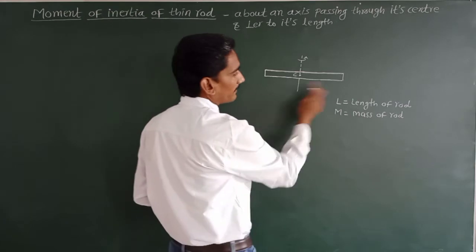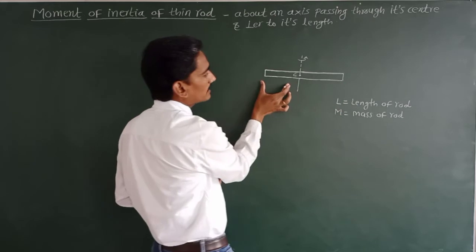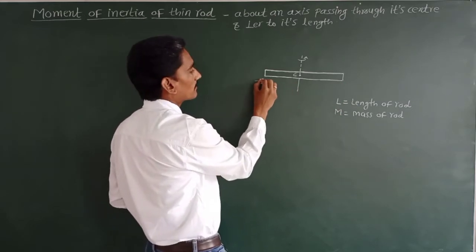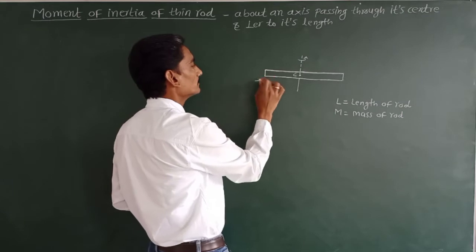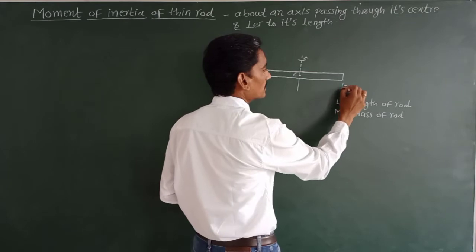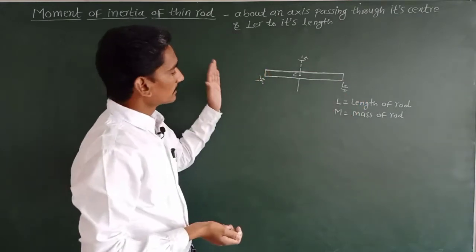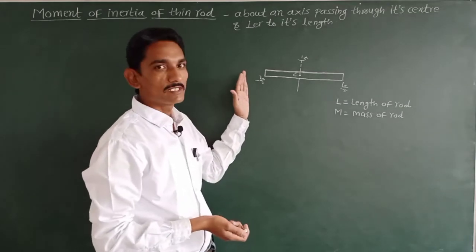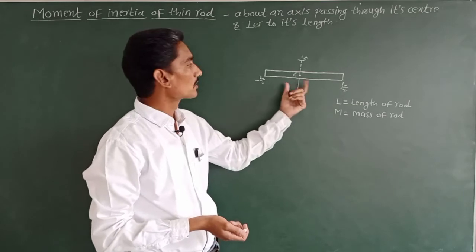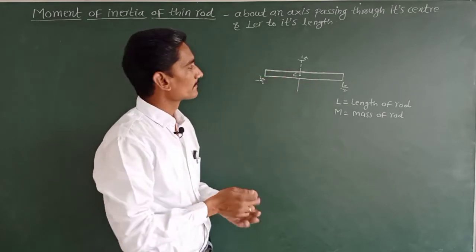If capital L is the length, then we can say this length is L/2 and this length is L/2. We can say it is minus L/2 on one side and plus L/2 on the other side. So due to this axis of rotation, the rod is separated into exactly two equal parts.